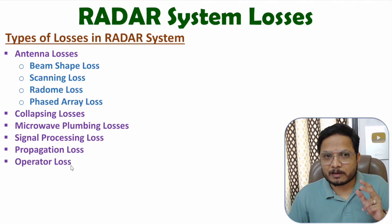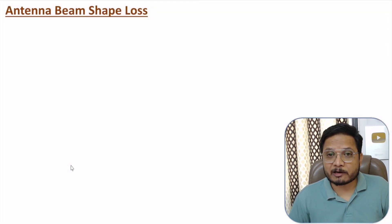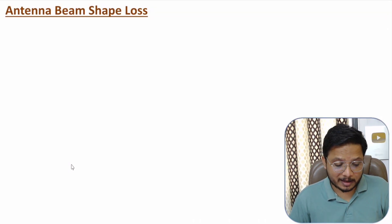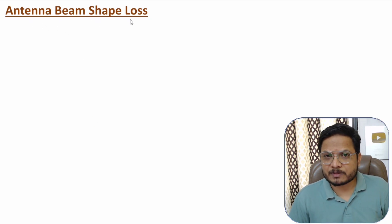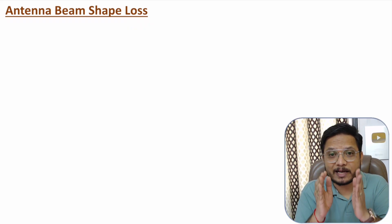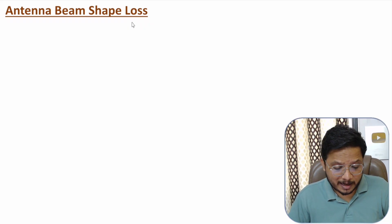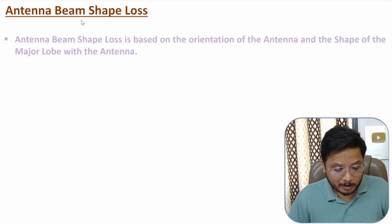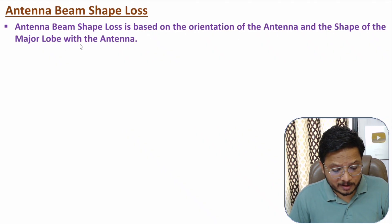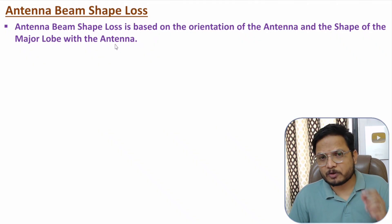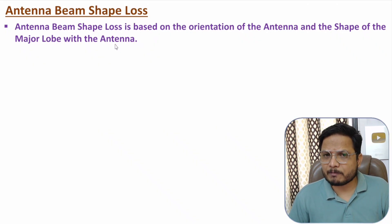Let us start with the first category, which is associated with antenna losses — specifically, antenna beam shape loss. This loss is based on the shape of the beam of the radiation pattern, particularly the orientation of the antenna and the shape of the major lobe.